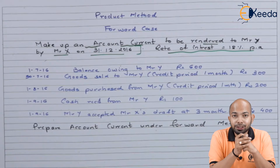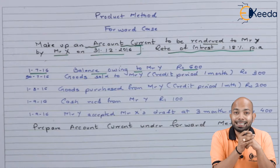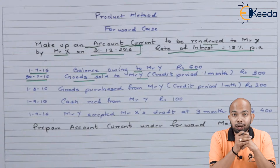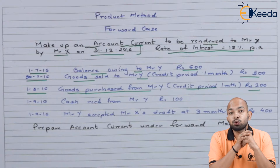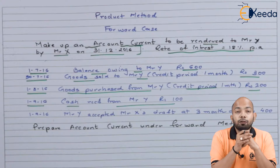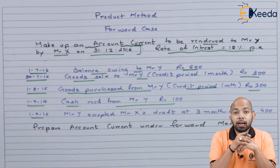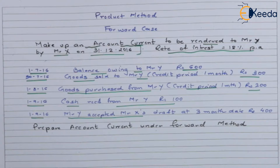The transactions are as follows: 1st of July — balance owing to Mr. Y, Rs. 600 (opening balance). 30th of July — goods sold to Mr. Y, credit period one month, amount Rs. 300. 1st of August — goods purchased from Mr. Y, credit period one month, amount Rs. 200. 1st of September — cash received from Mr. Y, Rs. 100. Also on 1st of September — a draft accepted by Y, referred to Mr. X at a period of 3 months date, amount Rs. 400.